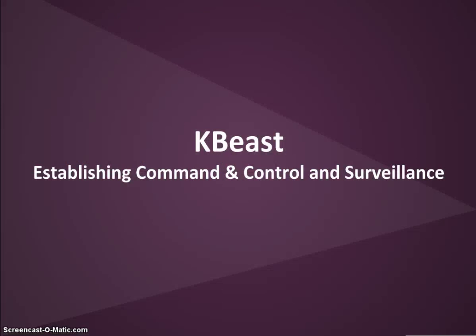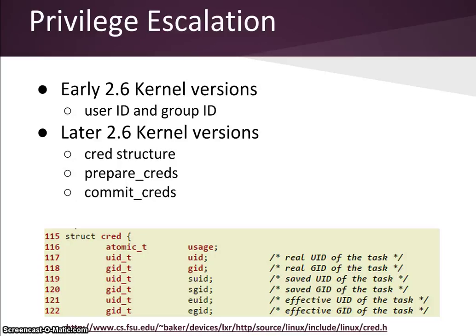In early versions of 2.6 kernels, the user ID and group ID of a process could simply be set to zero in order to give the process root privileges. Later versions of the 2.6 kernel came with a cred structure that holds all the information related to the privileges of a process. The prepare_creds and commit_creds functions are used to allocate and store new process credentials. A rootkit can leverage these functions in order to create another cred structure with root privileges, thus giving the attacker's process full control of the system.